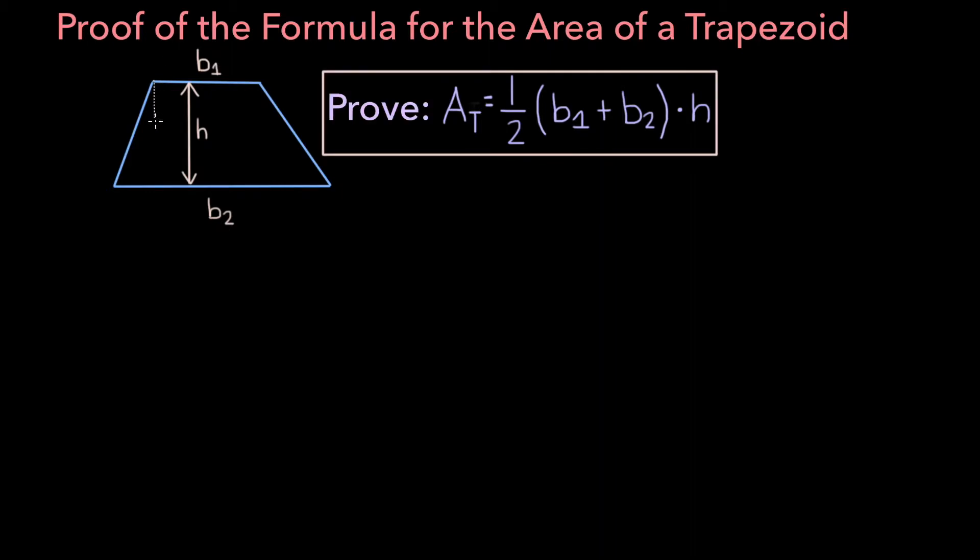Let's begin the proof by breaking up our trapezoid into three different shapes. Our three different shapes are these two right triangles as well as the central rectangle. Let's call the area of this rectangle A1, the area of this triangle A2, and the area of this triangle A3.